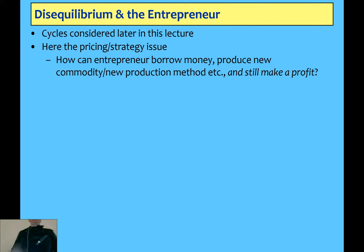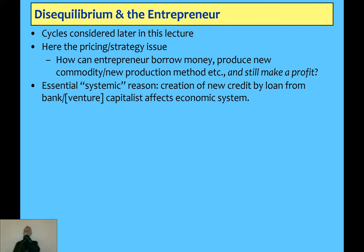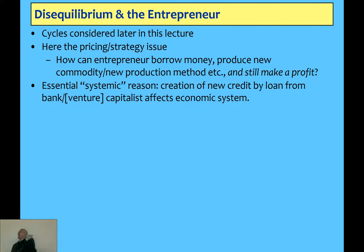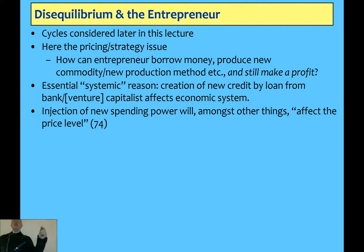I did record the last lecture. So the question is, how can you borrow money and make a profit? And what Schumpeter is saying is the actual creation of money is part of how they make a profit. When you have the creation of money by the banks, that is an additional injection of money into the system. It didn't exist beforehand, and it drives up the price level.